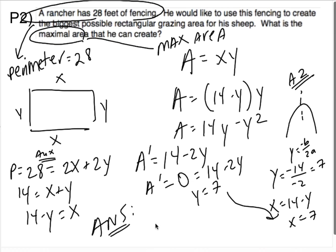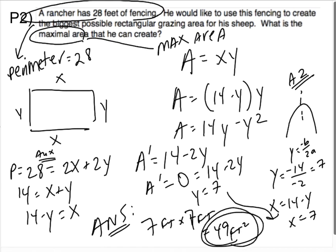So your answer is 7 feet by 7 feet equals 49 feet squared. Because they say, what is the maximal area? They don't actually want the 7 by 7. They want the 49 and that's it for this video.